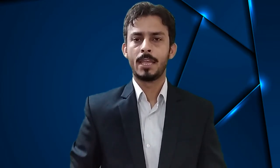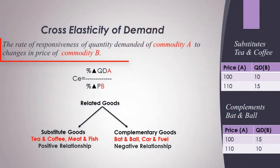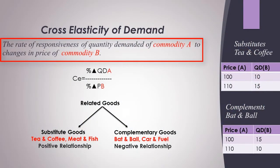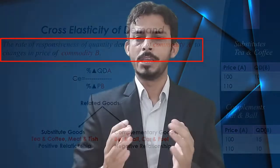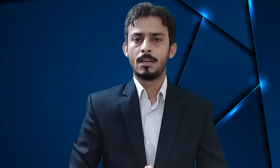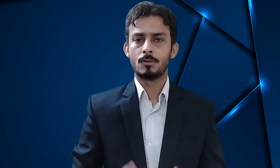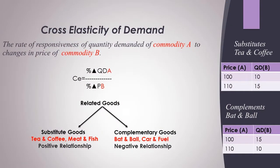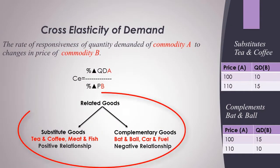Cross elasticity of demand means the responsiveness of quantity demanded of good A due to the change in the price of good B. This involves what are called related goods. There are two types of related goods: number one, substitutes, and number two, complementary goods.